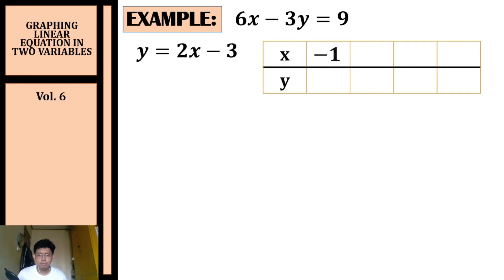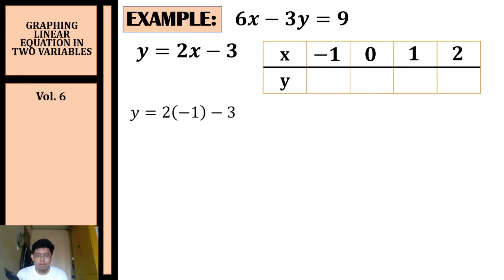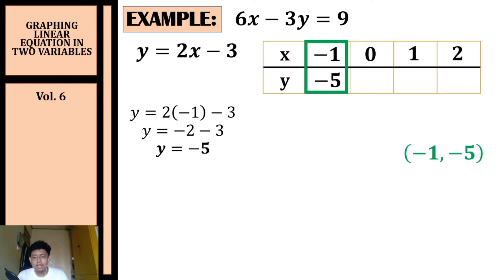Assign any values of x — I'm going to use negative one, zero, one, and two, since smaller numbers are easier to substitute. Substituting x equals negative one: y equals two times negative one minus three, which simplifies to y equals negative five. Our first coordinate is (−1, −5).